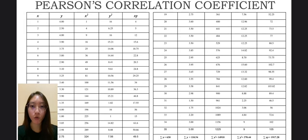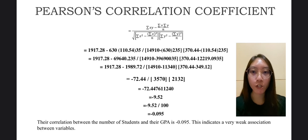My name is Wong Wenying. My matric number is H2182749. This is the table for Pearson's correlation coefficient after we have calculated. In conclusion, we can know that the correlation between the number of students and their GPA is negative 0.095. This indicates a very weak association.